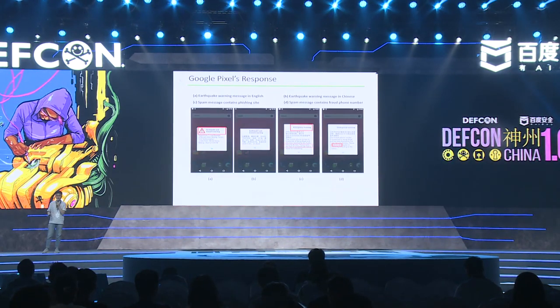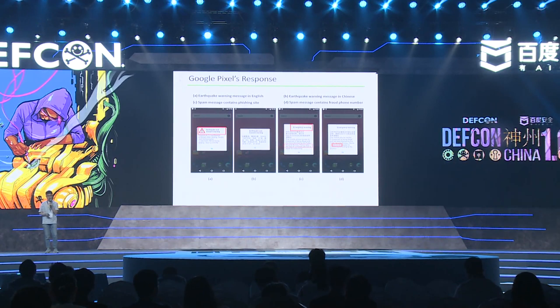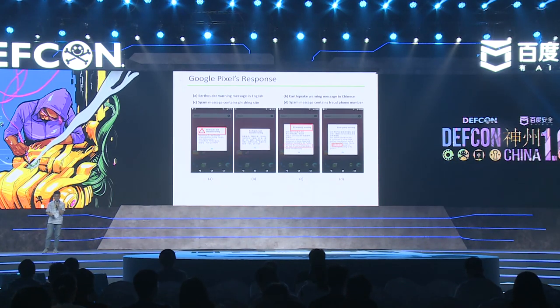Here are four fake warning messages we have forged. The first two are earthquake warning messages — we added the earthquake location, time, and magnitude, stating there will be an earthquake in Beijing and Tianjin. The second picture is the same content translated into Chinese using the UCS2 encoding standard. The last two are emergency warning messages using identifier 0x1104, with a phishing website and a phishing phone number added respectively.